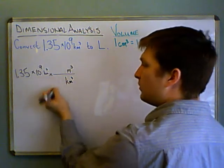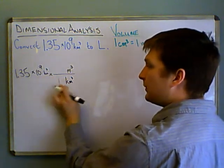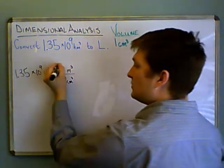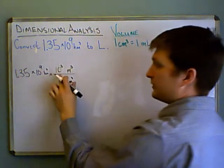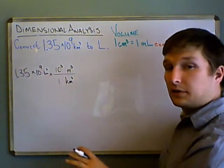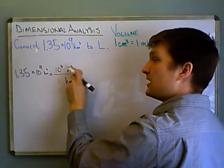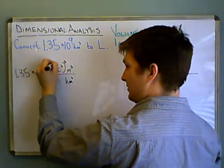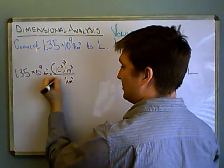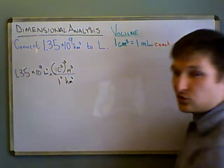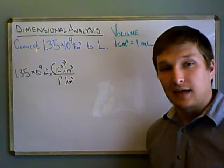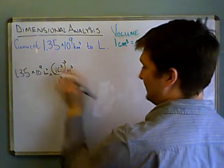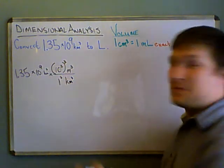Now okay, so just like normal, we would write there's one kilometer and that would correspond to 10 to the third meters. Now that's just normally, but now that this is raised to the third, we have to raise this to the third, and this to the third. Luckily that's just one, and we're not going to have to really mess with that in the calculator.